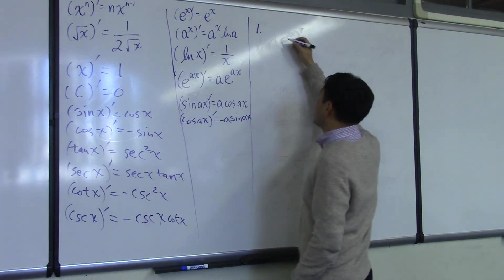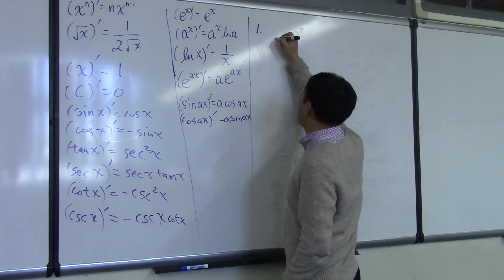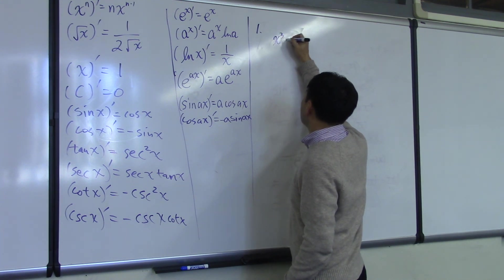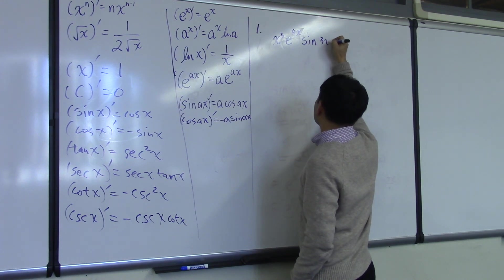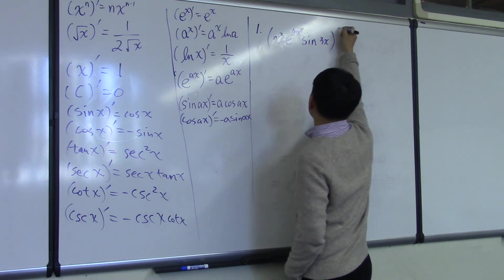So suppose you have x cubed e to the 4x sine 3x prime. So here's a product of 3 things.